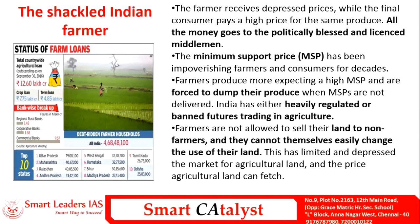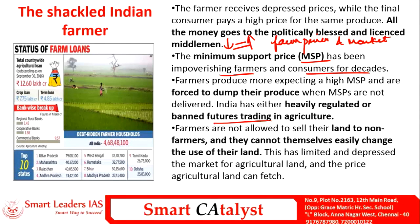Apart from structural problems in APMC, there is also a wide gap between farm price and market price. The price at which goods are procured from a farmer is far lower than what is paid by an end consumer. This gap has the potential to create inflationary situations for consumers and deprived income levels for farmers. The author says that MSP has been impoverishing farmers and consumers for decades by widening this gap. One possible way for farmers to improve income is through futures trading in agriculture, but a near-prohibitory regulatory mechanism in India has restricted its spread.